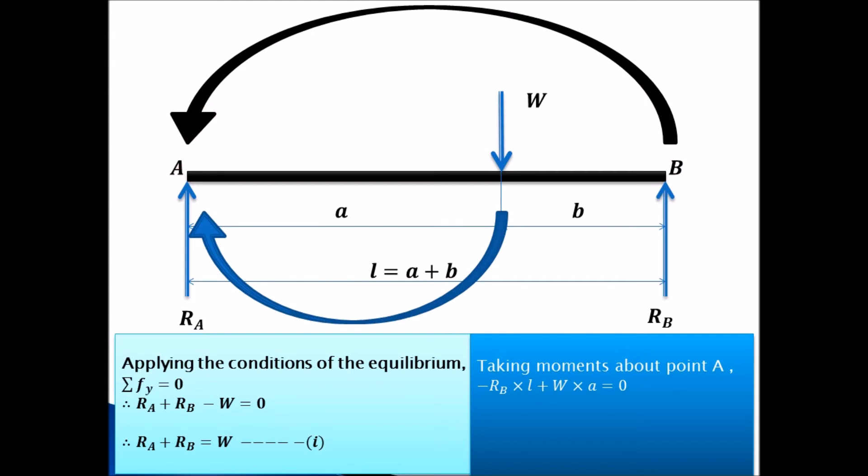Whereas this W, it will have clockwise moment. W will have clockwise moment about A. So as RB is having anticlockwise moment, we'll assign anticlockwise moment to be negative.